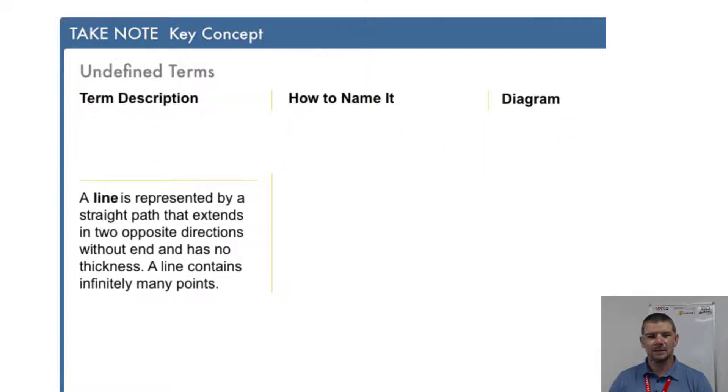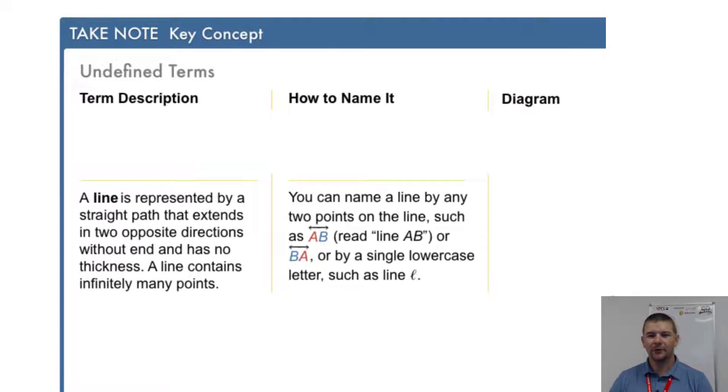Next, term description: a line is represented by a straight path that extends in two opposite directions without end and has no thickness. A line contains infinitely many points.